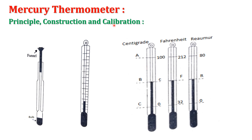Such a thermometer is very sensitive since mercury is a good conductor of heat, and it is easy to see how it rises in the capillary tube. It gives a quick response within a very short interval of time since it has low specific heat. This thermometer is commonly used for practical measurement of temperature.